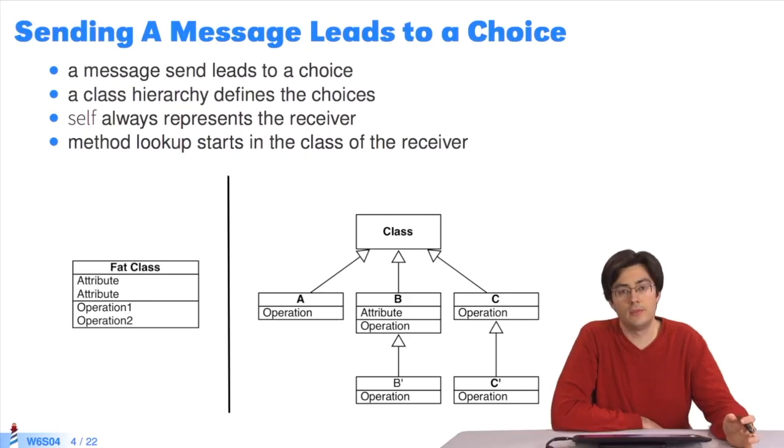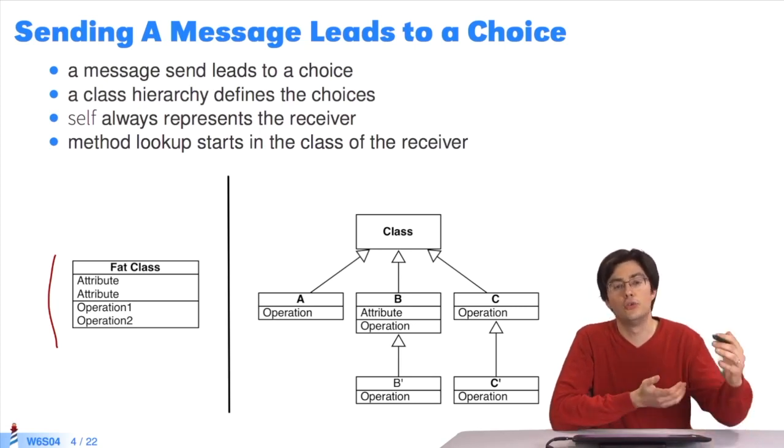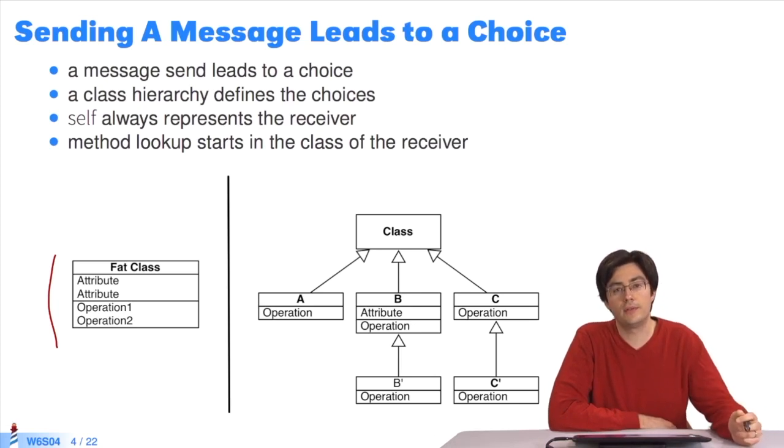A hierarchy of classes and a same method implemented in several classes is one means of defining choices. If I take a fat class with lots of operations, and I have to choose an operation according to status, my code will say, if I'm in this state, I do this operation. If I'm in that state, I do that operation. You'll have big codes with ifs all over the place.